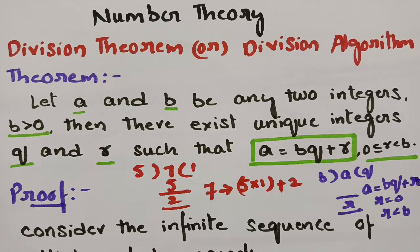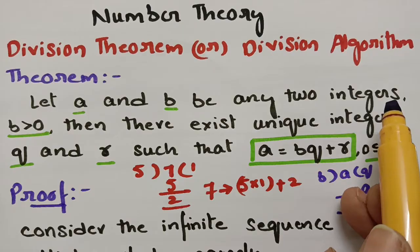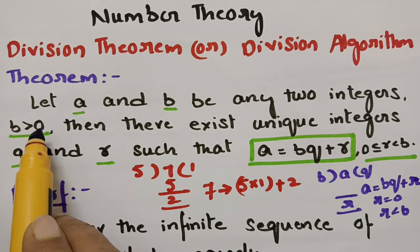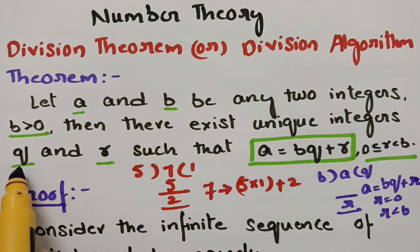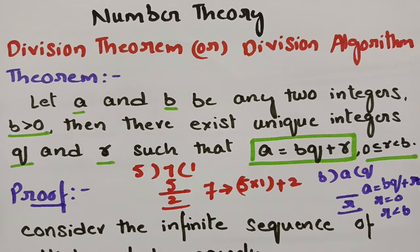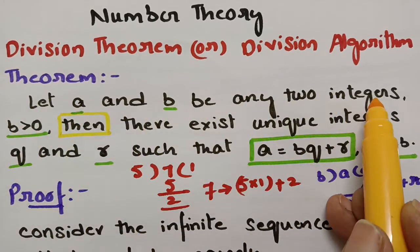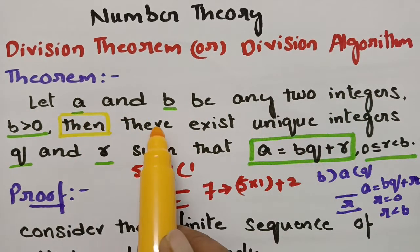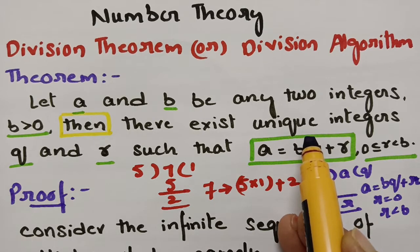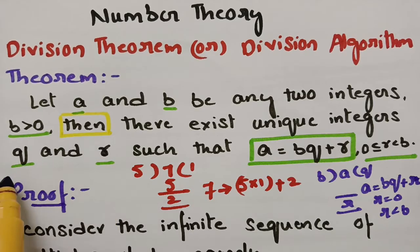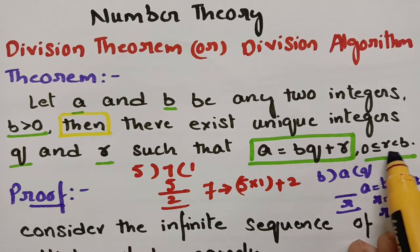The theorem is flashing on the screen. The statement states that let a and b be any two integers, and strictly b is greater than 0, so b is a positive integer. Then there exist unique integers q and r. Before 'then' the statement is given, and after 'then' we need to prove. We have to prove uniqueness also. So q is the quotient and r is the remainder such that a is equal to bq plus r, where 0 is less than or equal to r less than b.